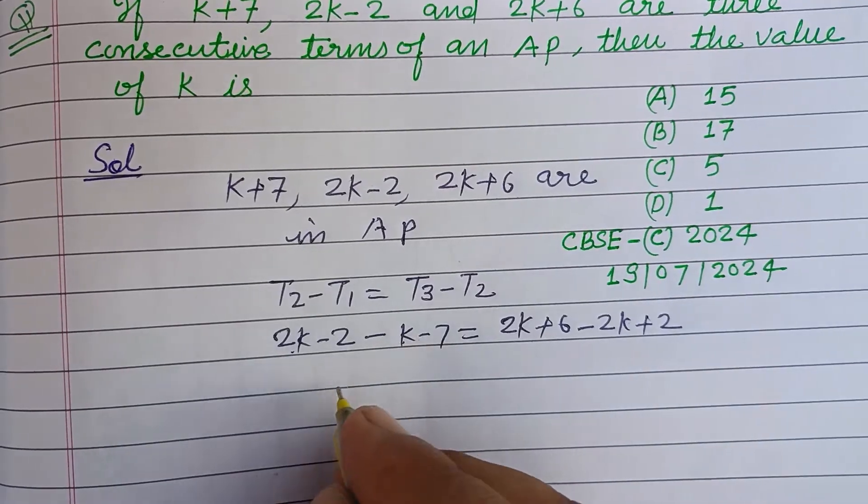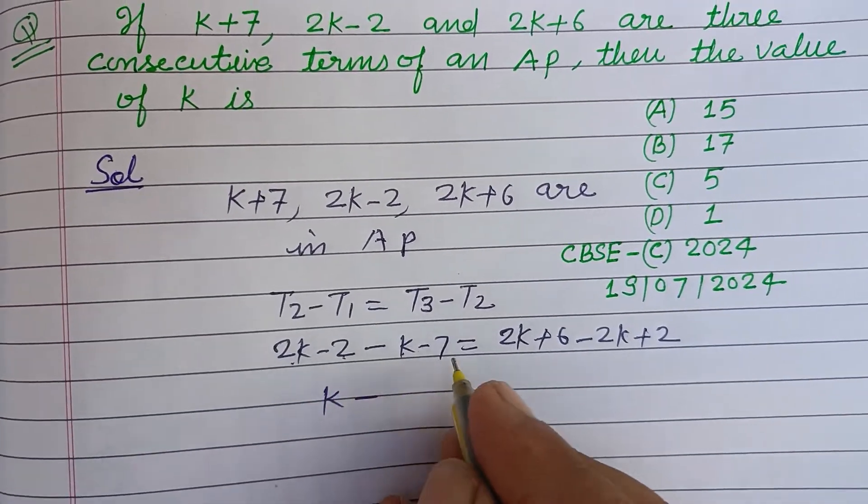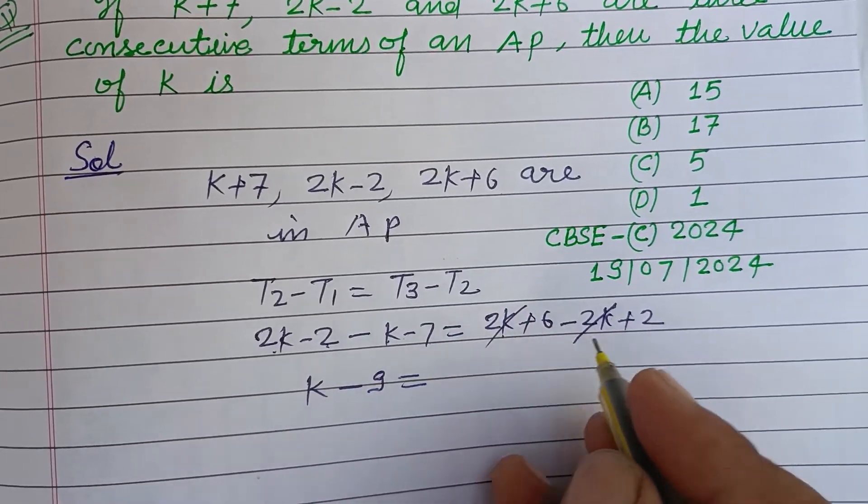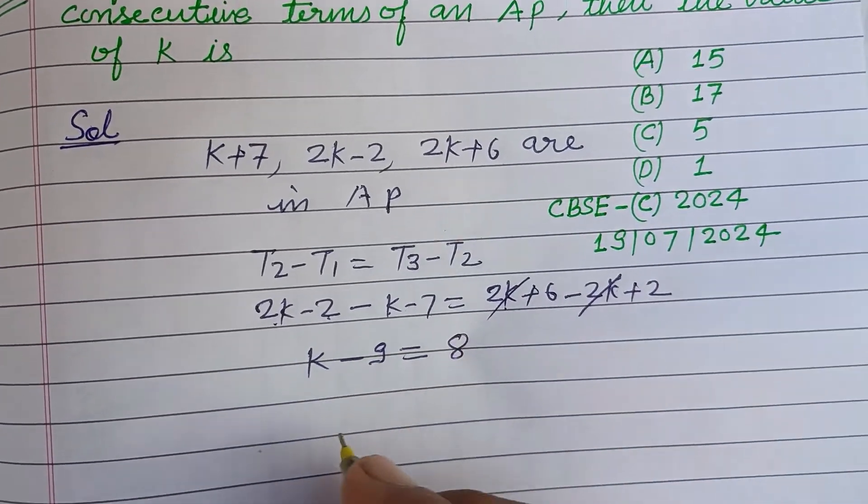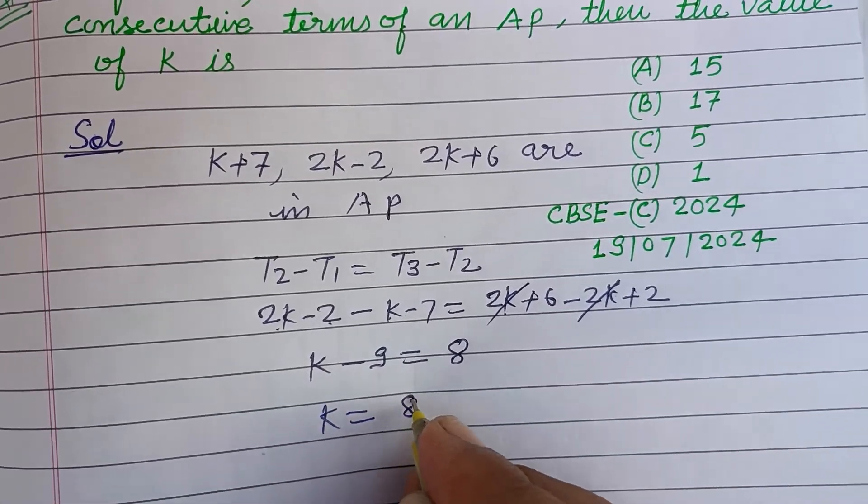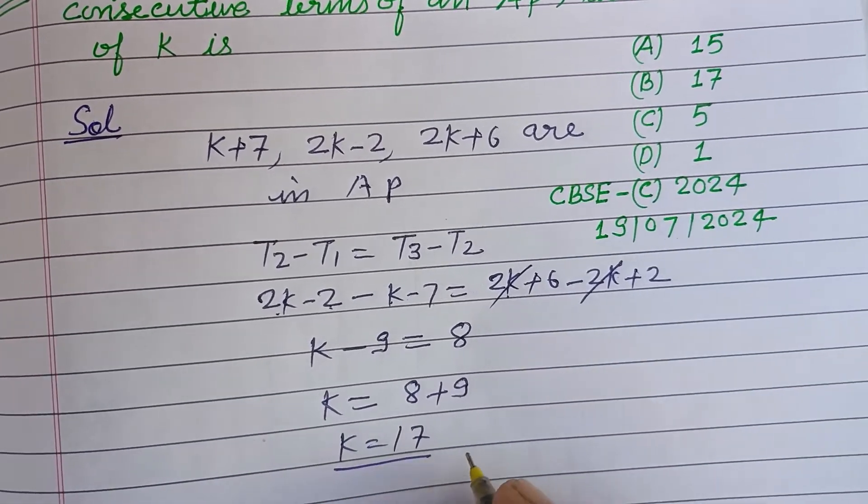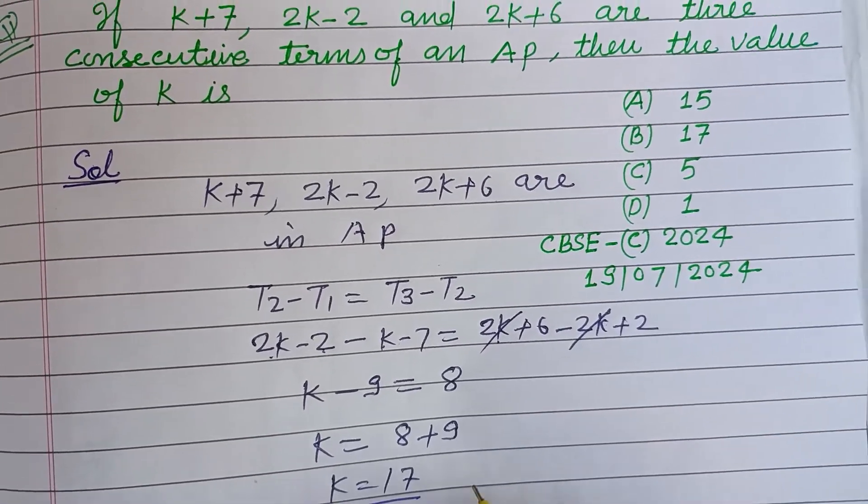Here 2k minus k, this is k, minus 2 minus 7, this is minus 9. 2k minus 2k, this cancels out. 6 plus 2, this is 8. So k equals 8 plus 9, k equals 17.